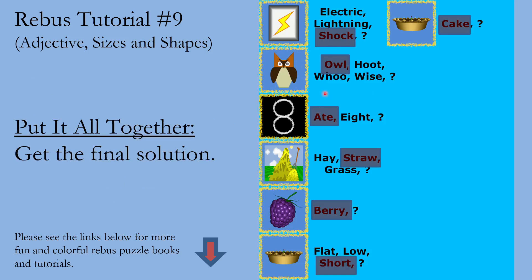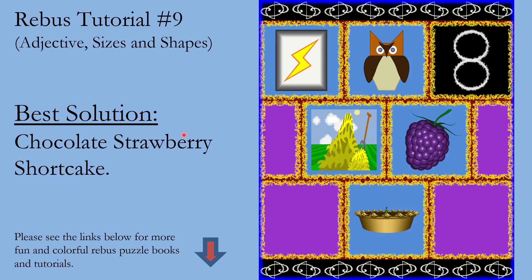We're looking for the first thing and we know it's cuisine, so we're looking for something edible. If you've ever seen the TV show Riverdale, you'll see this on Pop's Diner — they have shock, something chocolate. So here we have chocolate, and we have strawberry, and we have shortcake. The best solution is chocolate strawberry shortcake.